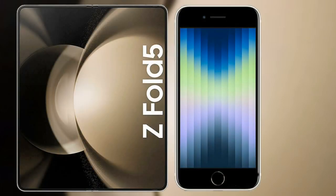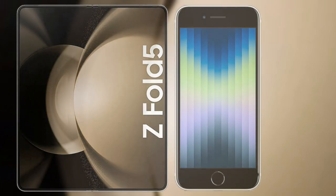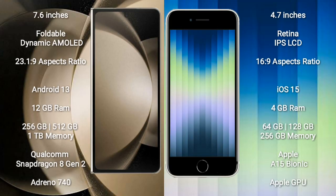I will compare the new Samsung Galaxy Z Fold 5 with iPhone 8C. Samsung Galaxy Z Fold 5 comes with a 7.6-inch foldable dynamic AMOLED display and aspect ratio 21:9. iPhone 8C comes with a 4.7-inch Retina IPS LCD and aspect ratio 16:9.